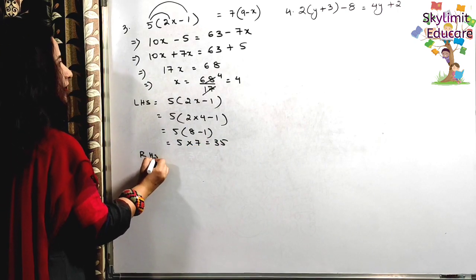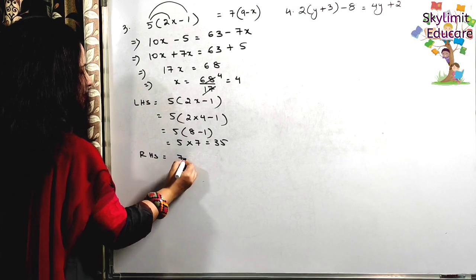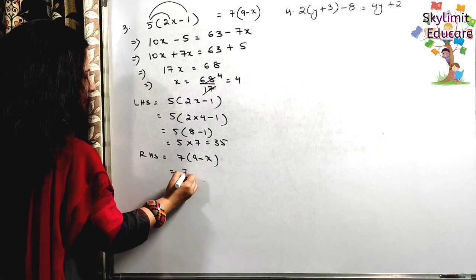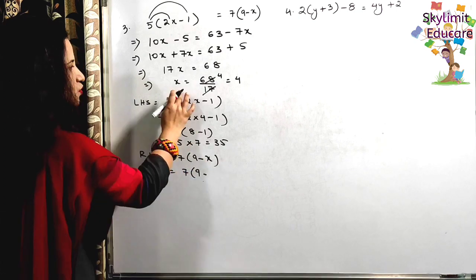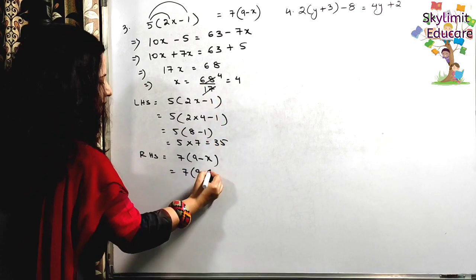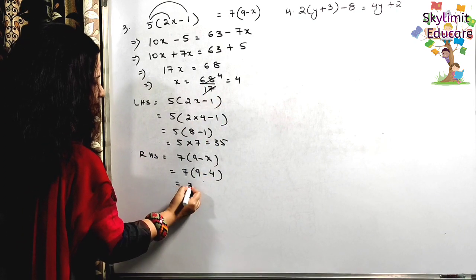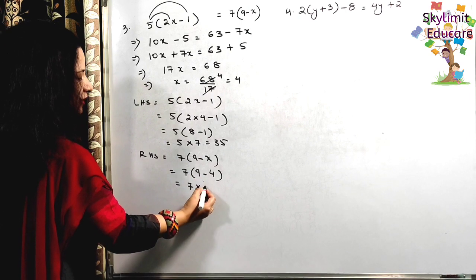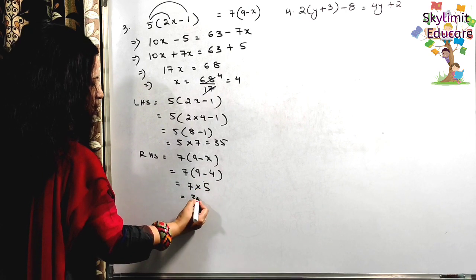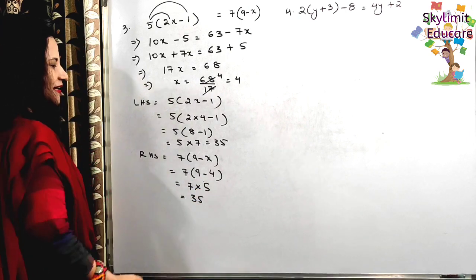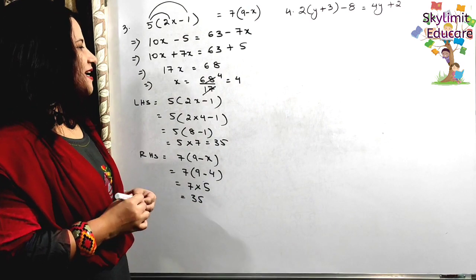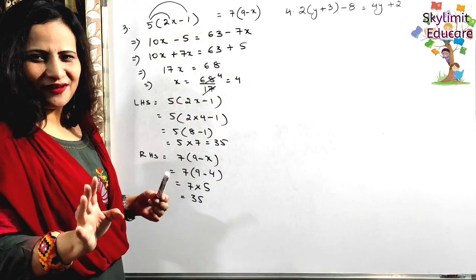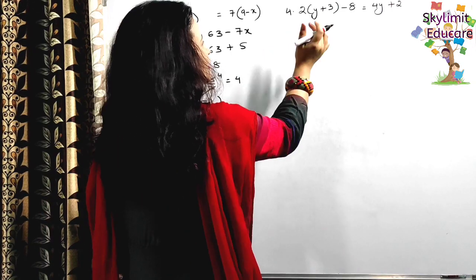Now check the right hand side: 7 × (9 - x). Substitute x = 4: 9 - 4 = 5. So 7 × 5 = 35. Therefore LHS = RHS = 35. Hence verified.